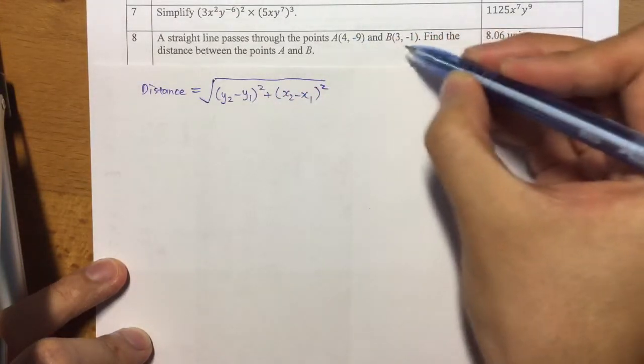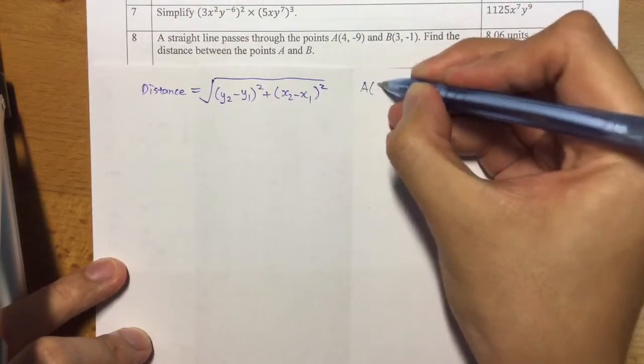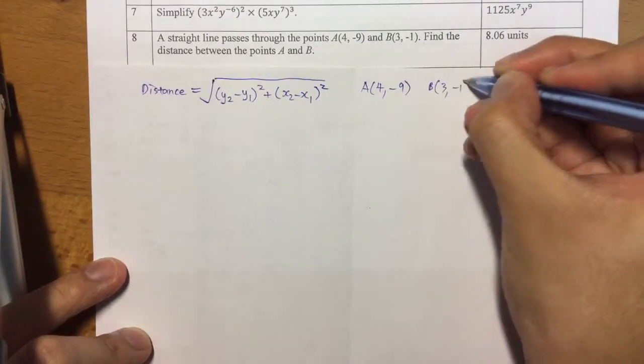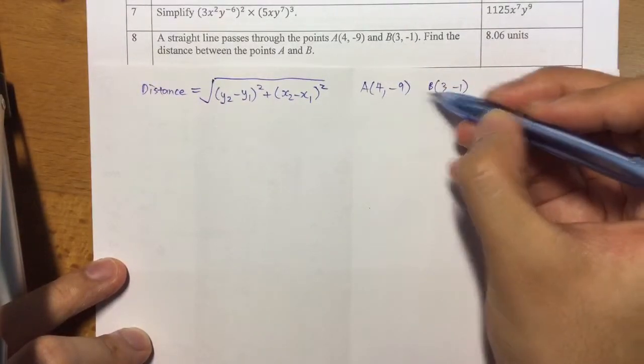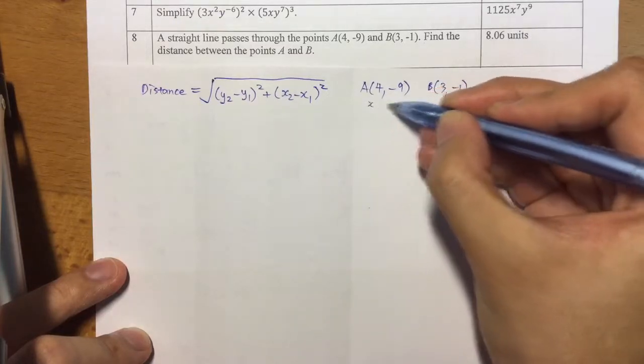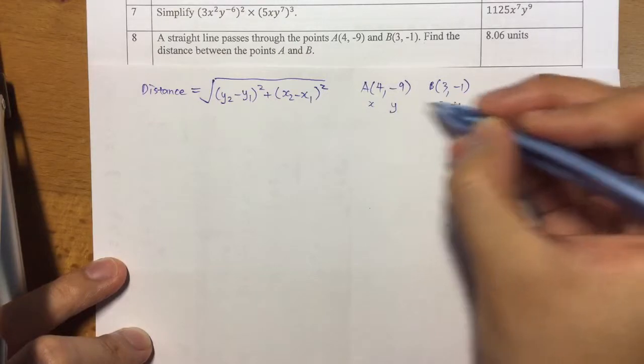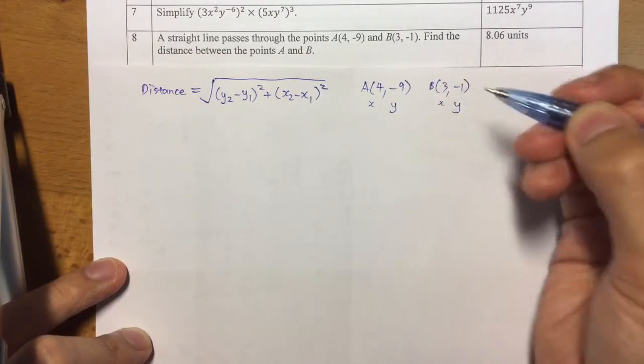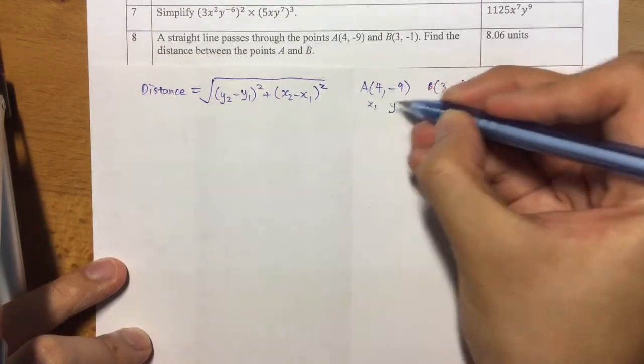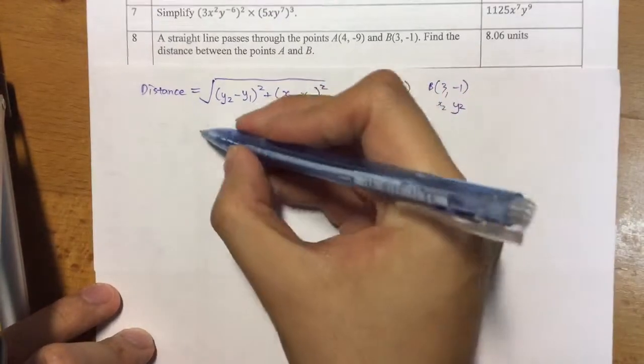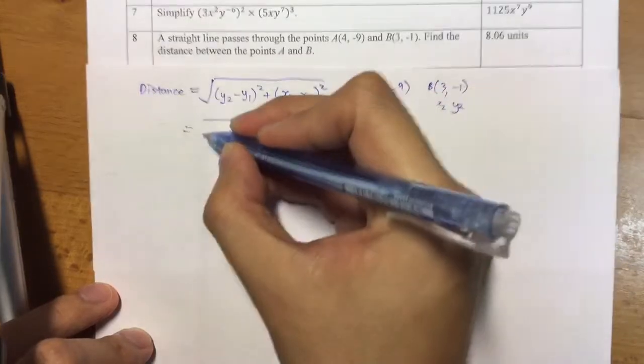They come from the points A and B. You do a quick labeling - since these are coordinates, you have x and y values. It doesn't matter which one is point 1 or point 2, you choose. Let's say I choose this one to be x1, y1 and this one to be x2, y2. It's just a matter of putting in the values and seeing what we get.